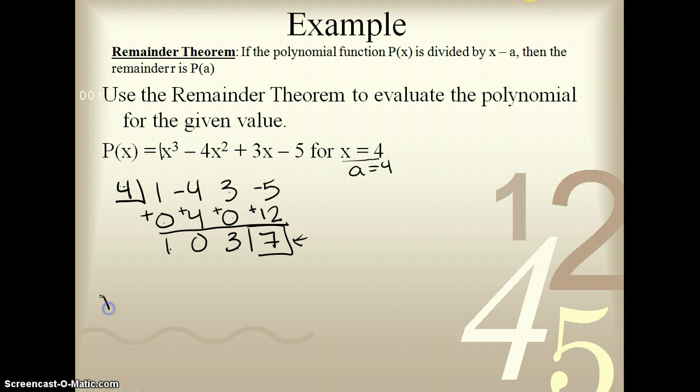Another way of checking this is to actually do p of 4, which is what the remainder theorem states. If r is what we're looking for, then p of a will give us that r. So, if we do this correctly, when I'm done, 7 should be our answer. We have 4 cubed minus 4 times 4 squared plus 3 times 4 minus 5.